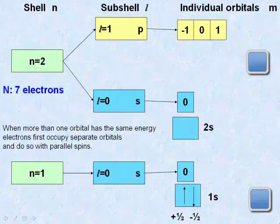Let's take, for example, the nitrogen atom, which has seven electrons. We start filling the lowest energy level first, which is the 1s shell, with two electrons.